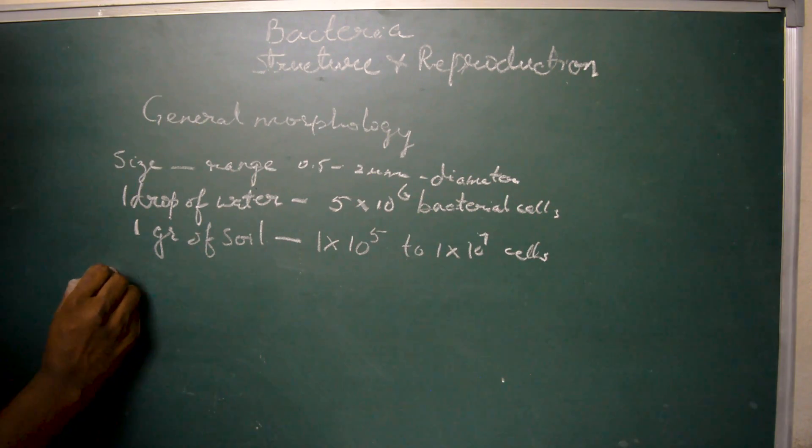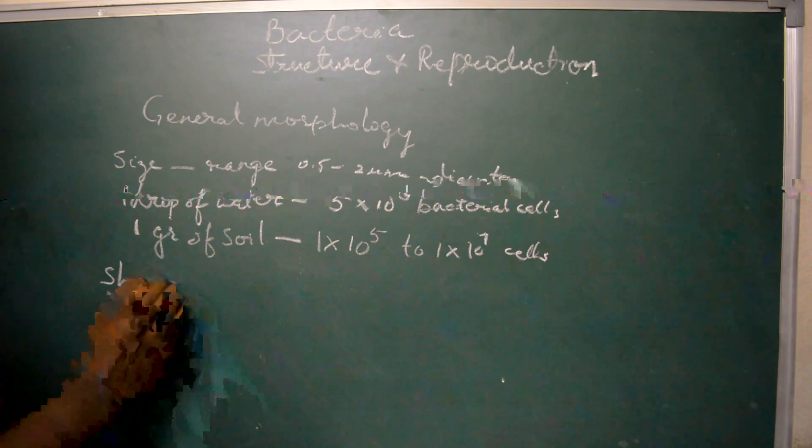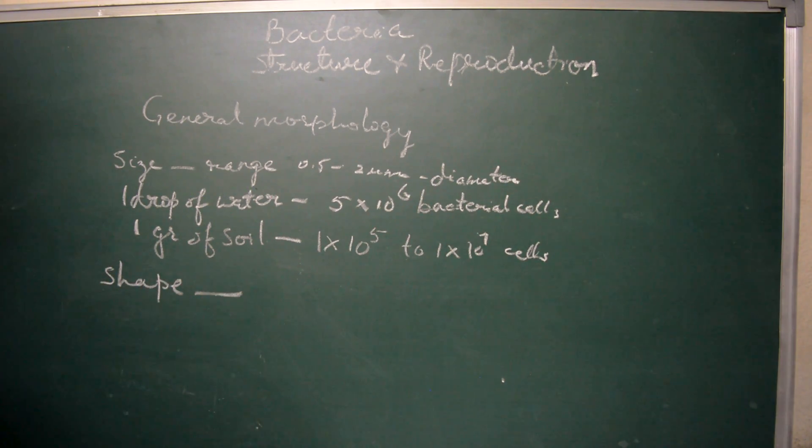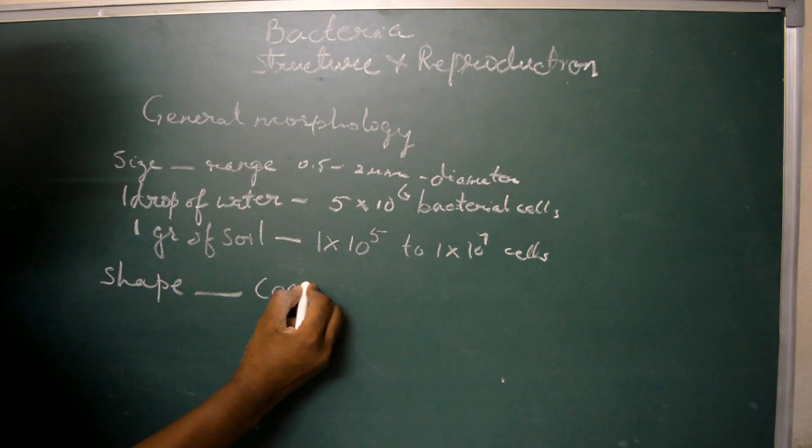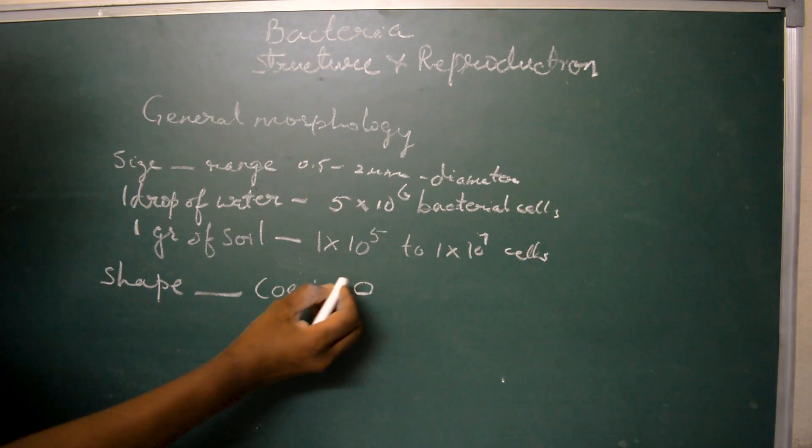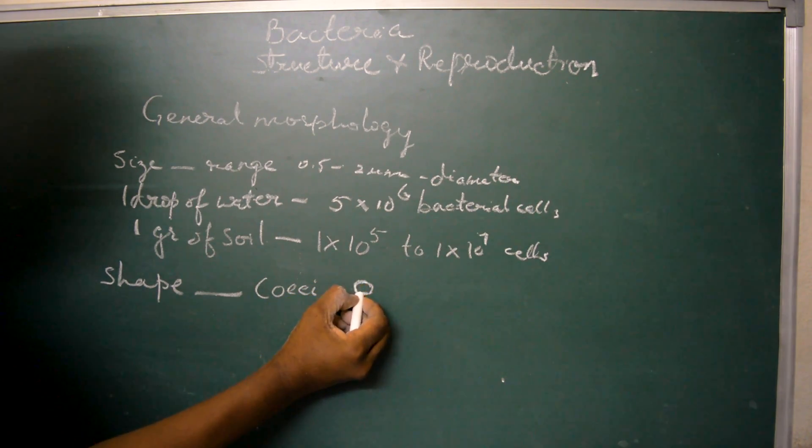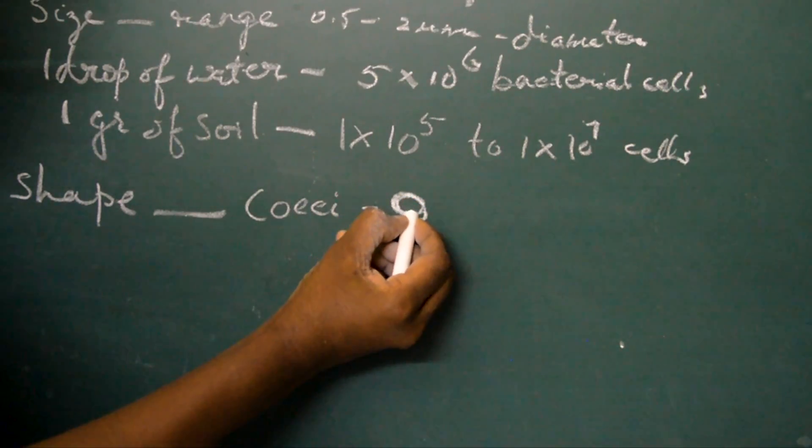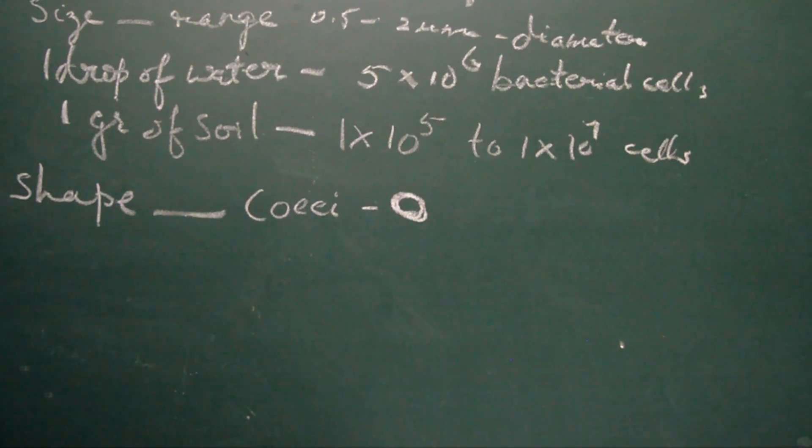Regarding the shape of bacteria, they are seen in a variety of shapes. The most commonly seen are the spherical ones which are called the cocci type of bacterial cells. They are spherical or oval in nature, and even in cocci type there are again certain differences.